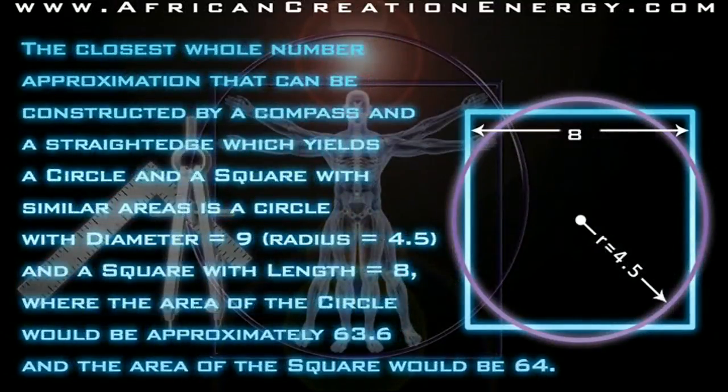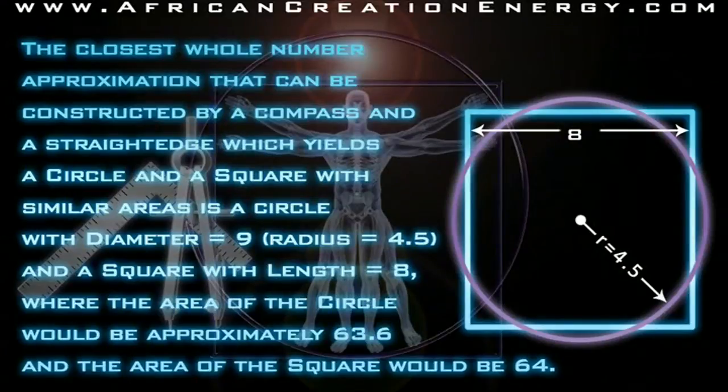The closest whole number approximation that can be constructed by a compass and a straight edge, which yields a circle and a square with similar areas, is a circle with diameter equal 9, meaning the radius is 4.5, and a square with length 8, where the area of the circle would be approximately 63.6 and the area of the square would be 64.